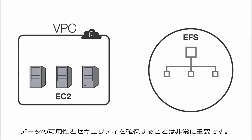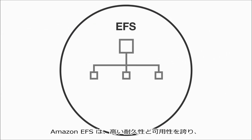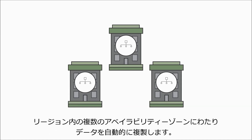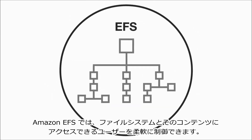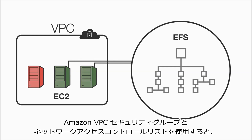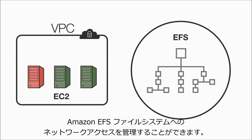Making sure your data is available and secure is really important. Amazon EFS is designed to be durable and highly available, and automatically replicates your data across multiple availability zones in a region. Amazon EFS gives you the flexibility to control who can access your file systems and their content. Amazon VPC security groups and network access control lists allow you to manage network access to your Amazon EFS file systems.